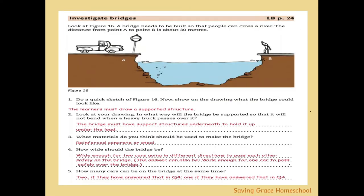Now investigate bridges. Looking at the figure, we want to build a bridge across a length from point A to point B — there's a river in the way and we need to cross 30 meters. Draw a quick sketch of this gap, then draw an example of a type of bridge you could use to cross this distance. Any feasible design from the types we've listed that you can draw in a way that makes sense is good.